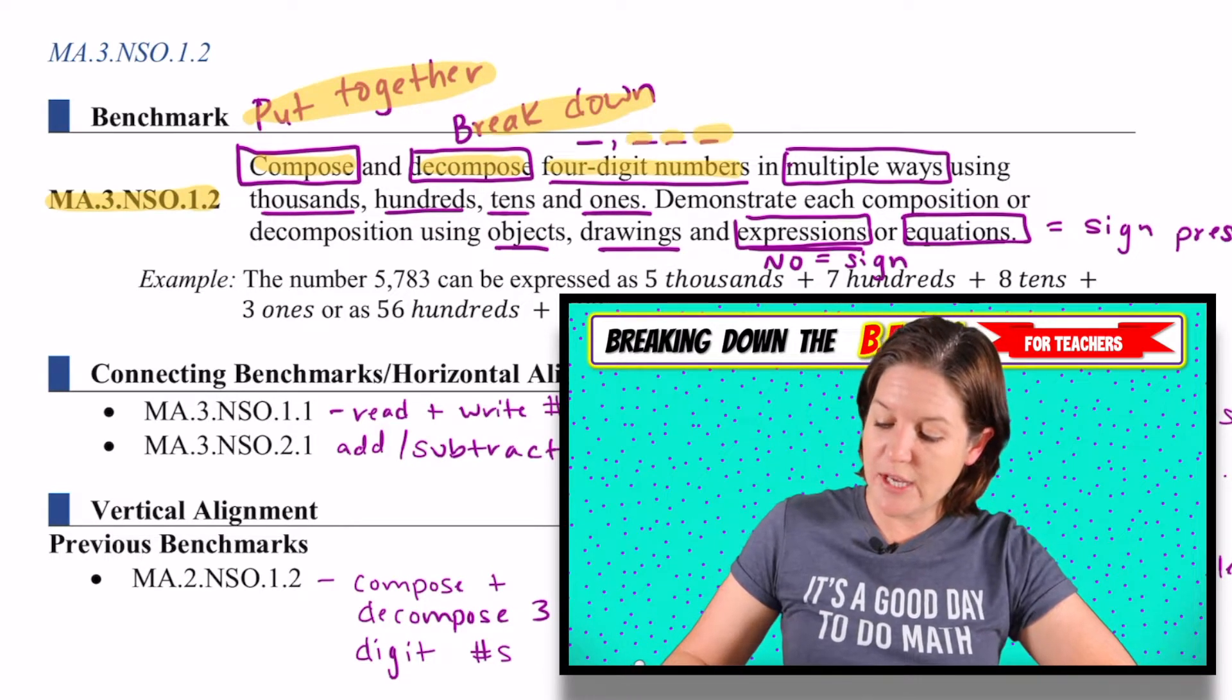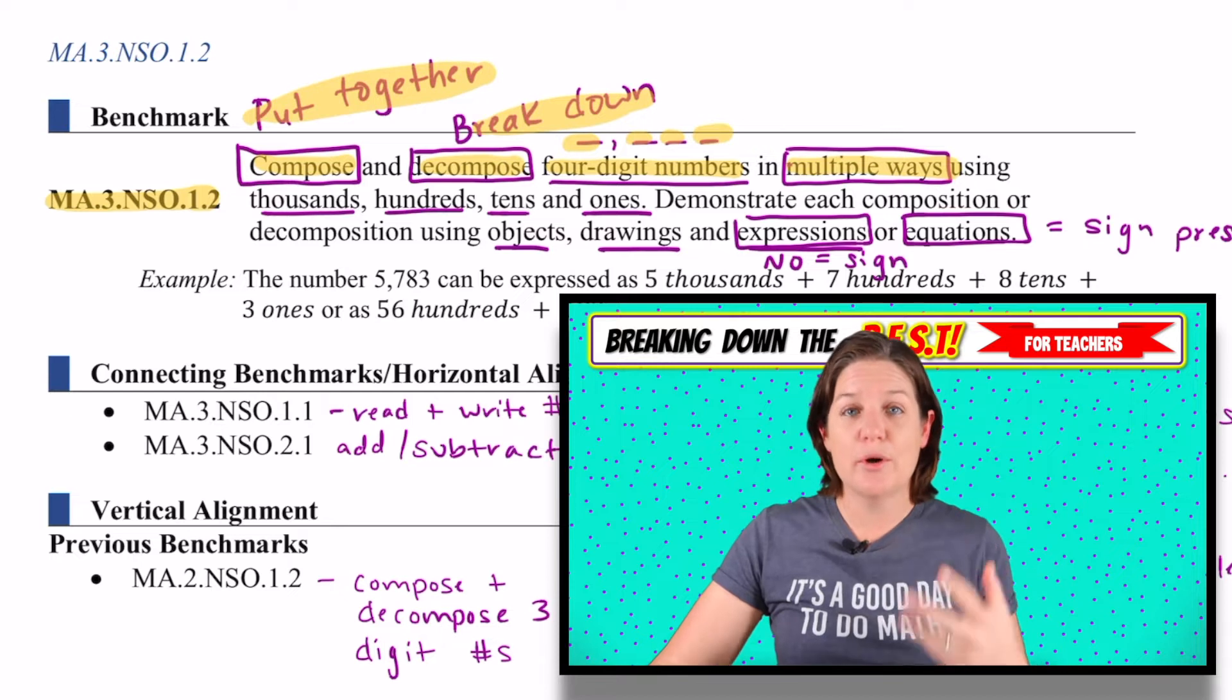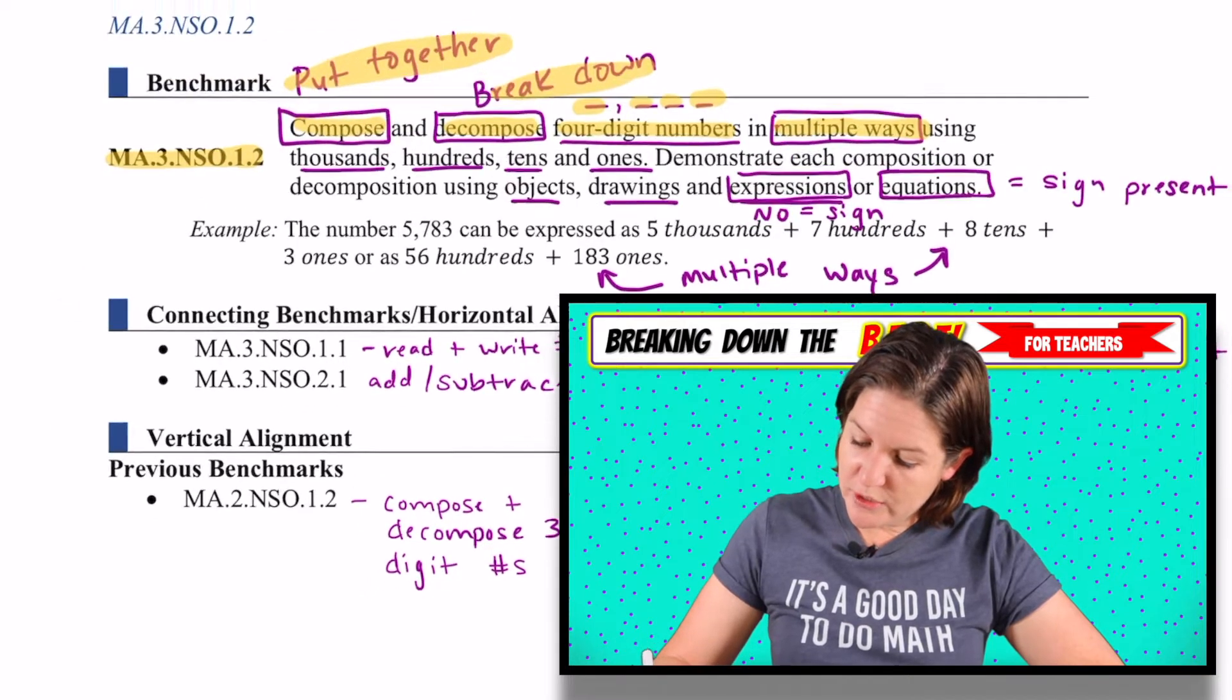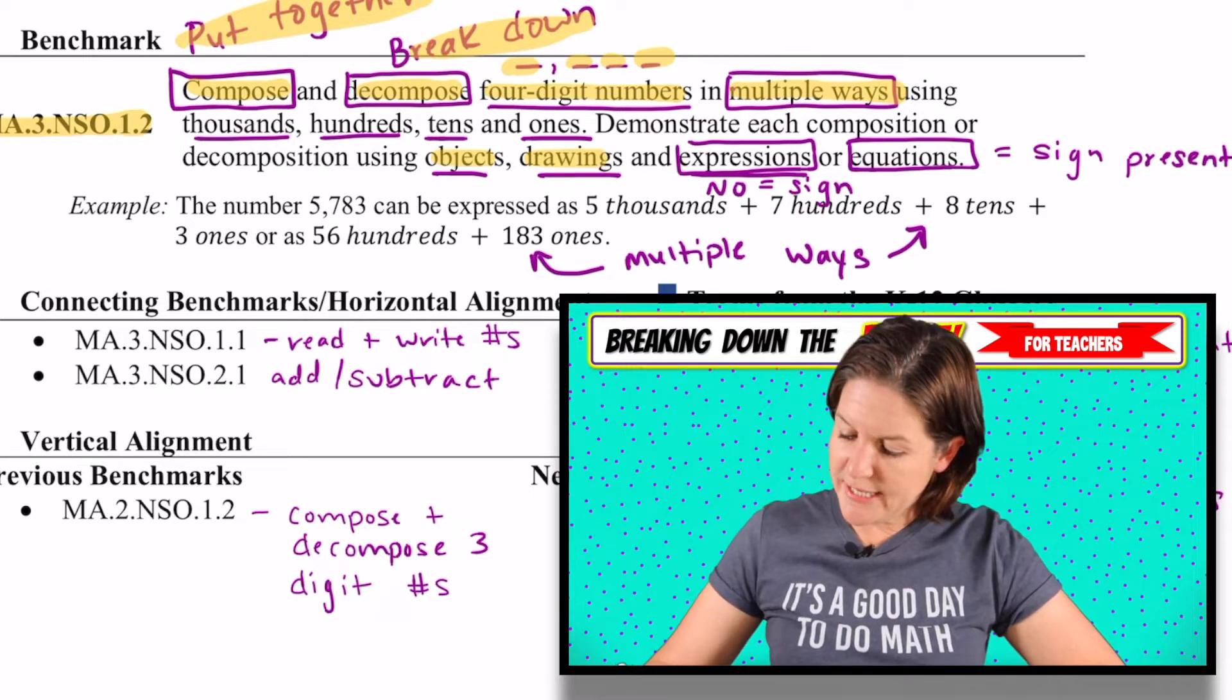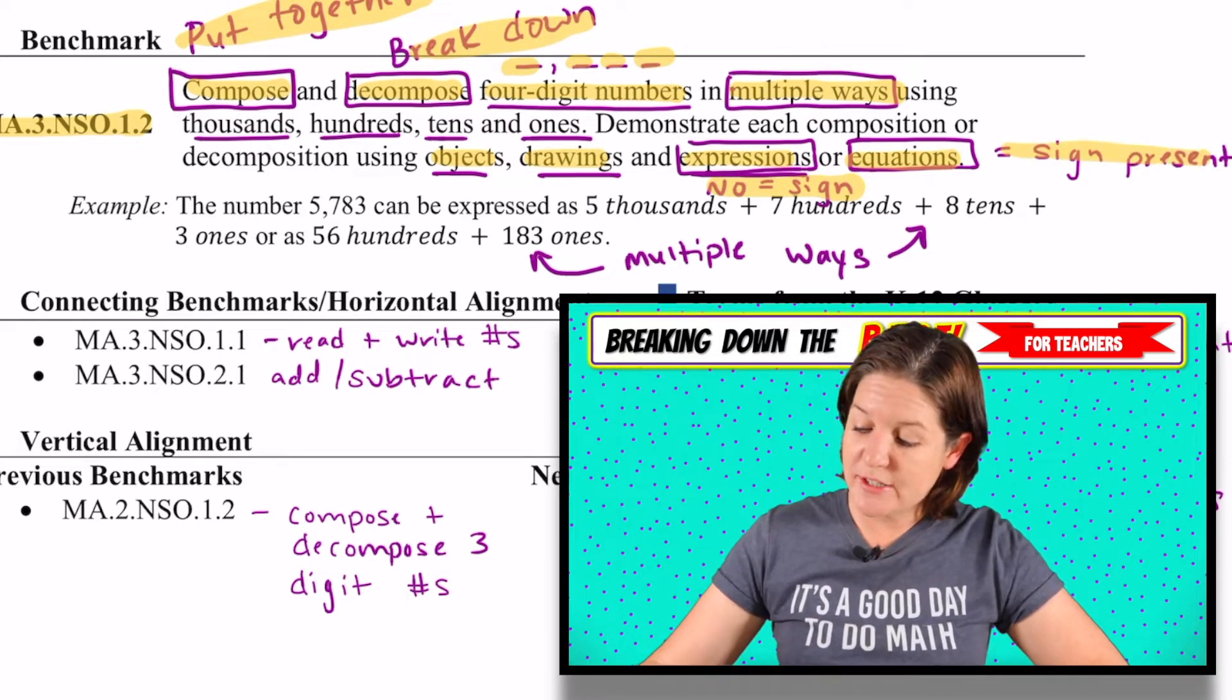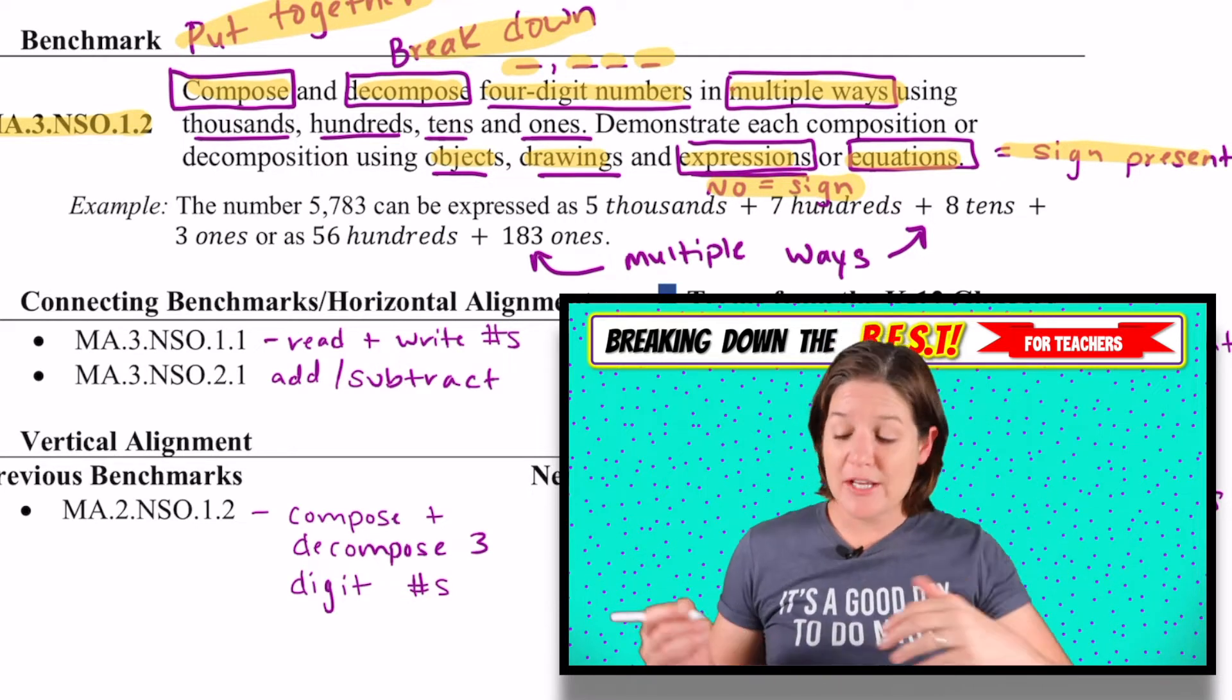So we've got the ones place, tens place, hundreds place, and thousands place in multiple ways. This is something that's really enforced throughout this standard, is being really flexible with how we compose and decompose answers. So there's more than one way to compose or decompose these numbers. We can do that using objects, drawings, which I'll show you some of that, and expressions or equations. Remember that expressions means that we do not have an equal sign present. And equations means that there is an equal sign present. So if you have three plus two, that's an expression. If you have three plus two equals something blank, that's an equation because there's an equal sign present.